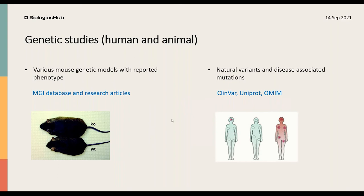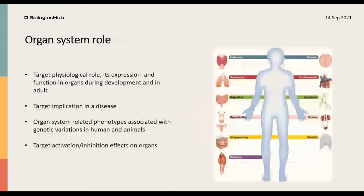With all this previous information in mind, we then analyze the target's role in all organ systems where it is expressed — investigating the target's physiological role during development and in the adult, and its association with diseases. We compare these findings with reported mouse and human phenotypes. Understanding this organ system role helps identify key questions about the safety of target modulation in each organ system, and also supports the basis for development of a new therapeutic drug.